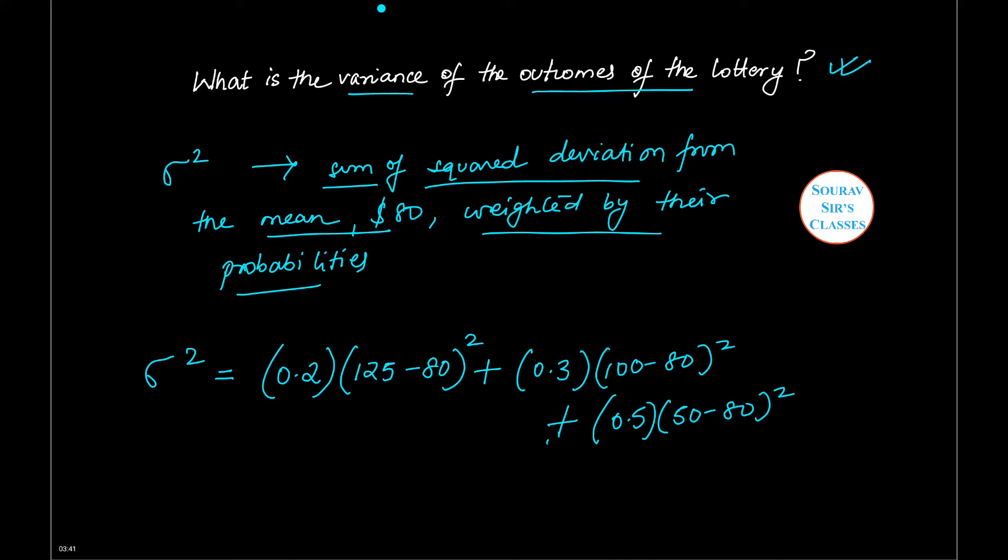So you have to find the sum of the deviation from the mean weighted by their probabilities. We have written it the way the definition is given. And if you calculate or simplify this, you will get a value of $975, which is the variance of the outcome of the lottery.